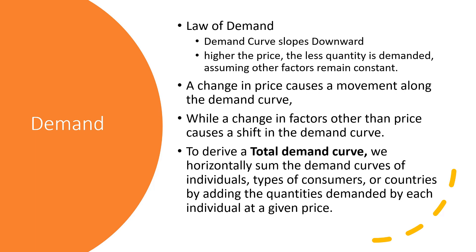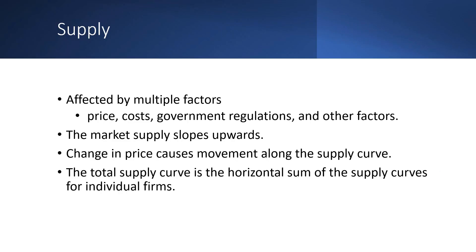To derive a total demand curve, we horizontally sum the demand curves of individuals, types of consumers, or countries by adding the quantities demanded by each individual at a given price.